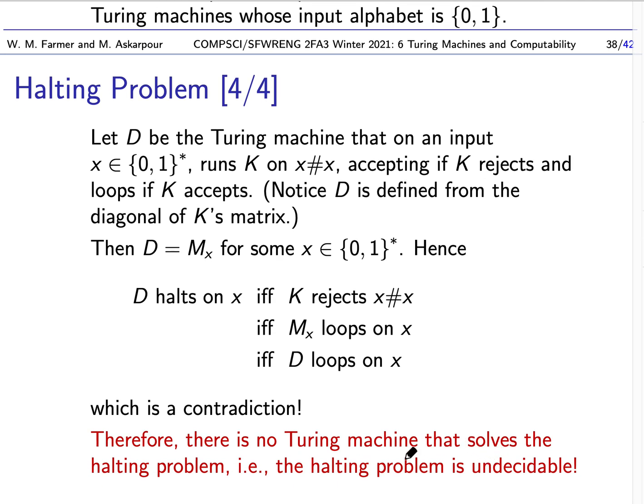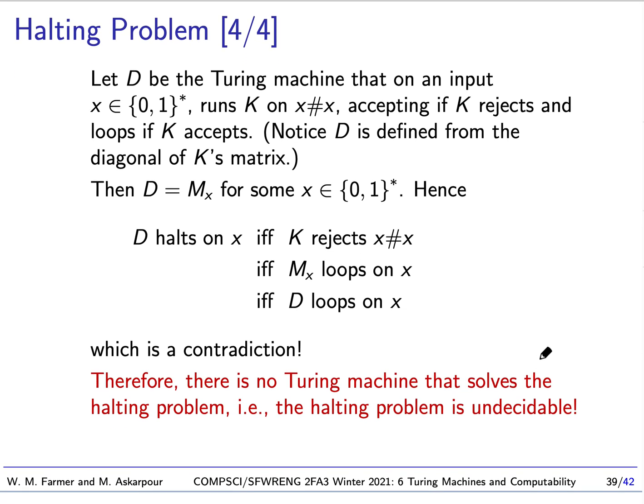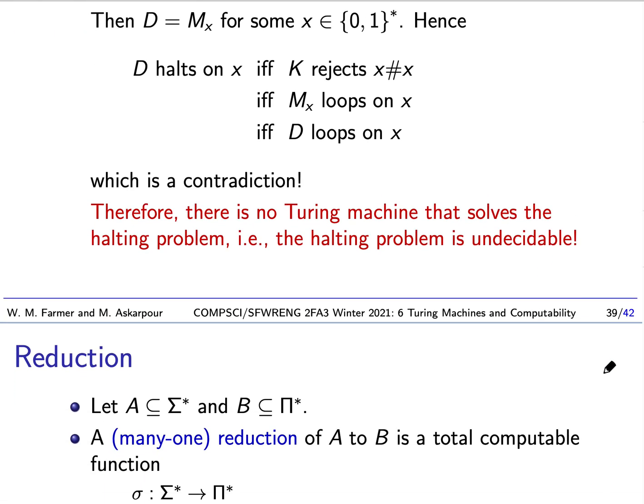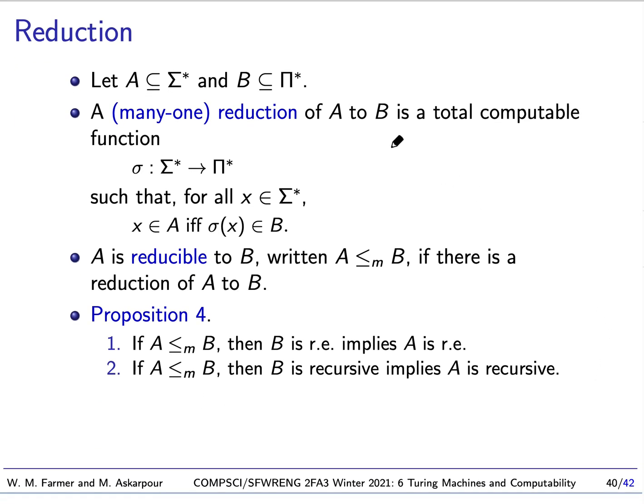Turing machine K. And as a result, it is not possible to solve the, as I said here, it's not possible to solve the halting problem for Turing machines whose alphabet is zero one, let alone solving the halting problem for all Turing machines. So this is one of the great theorems of theoretical computer science, one of the great theorems of computability theory, because it gives a precise example of a decision problem that is undecidable. Now,